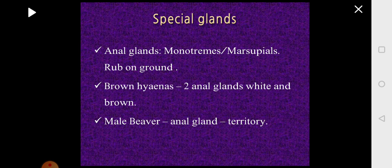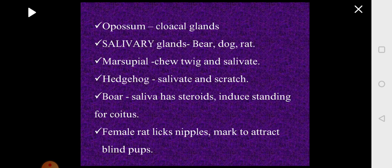There are special glands in vertebrates for secreting pheromones. In monotremes and marsupials, they have special anal glands whose secretions are rubbed on the ground. In brown hyenas, they have two anal glands — white and brown — whose secretions help in territory marking. Male beaver has an anal gland for territory marking. Opossum, a marsupial, has cloacal glands. Bear, dog, and rat secrete pheromones along with saliva from the salivary glands. Another marsupial chews a twig and salivates on the bitten spot to mark territory. Boar saliva contains steroids which induce mating posture.